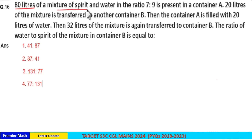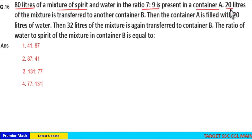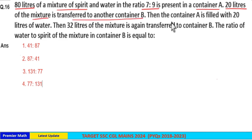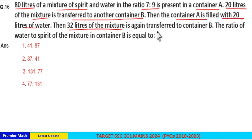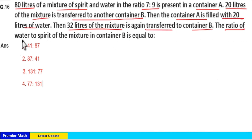80 liters of a mixture of spirit and water in the ratio 7:9 is present in a container A. 20 liters of mixture is transferred to another container B, then container A is filled with 20 liters of water. Then 32 liters of the mixture is again transferred to container B. Find the ratio of water to spirit in container B.